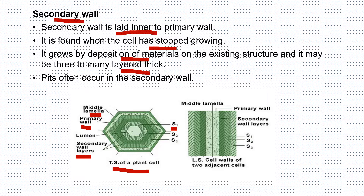In the longitudinal section as well, the same structure is observed. In the center is the middle lamella, on either side is the primary wall, and inside the primary wall is the secondary wall with inner S1, middle S2, and outer S3. This is all about the discussion of the structure of cell wall.